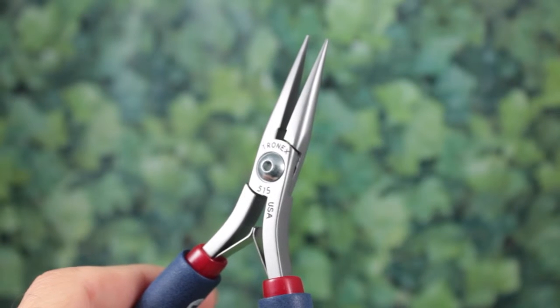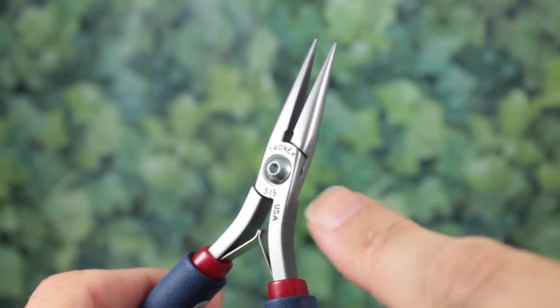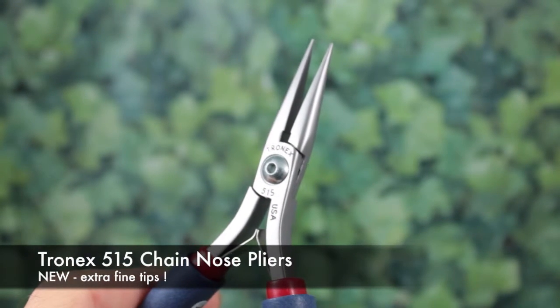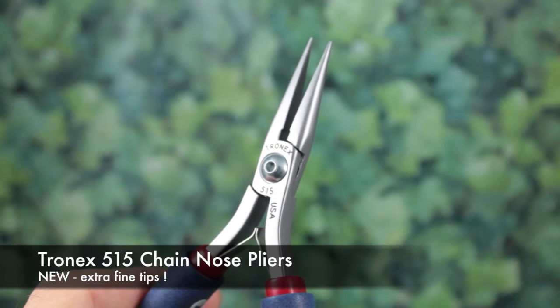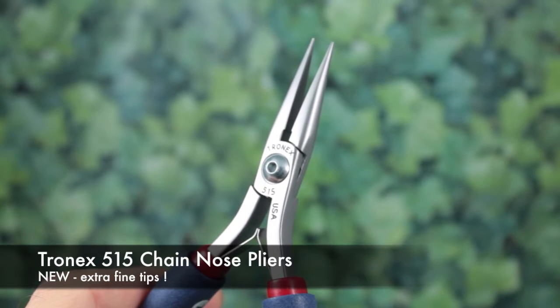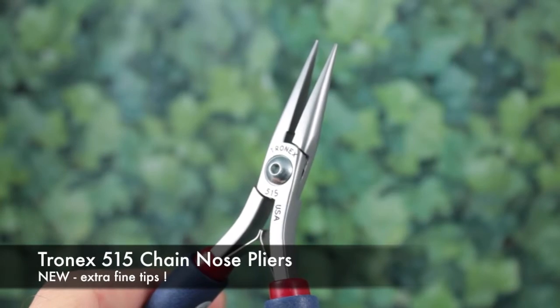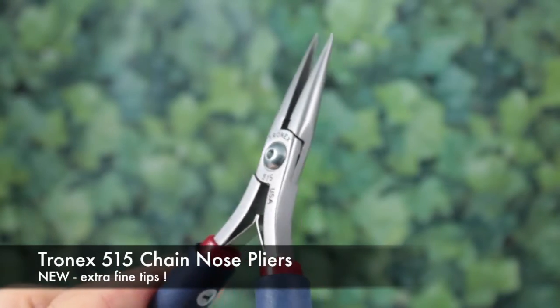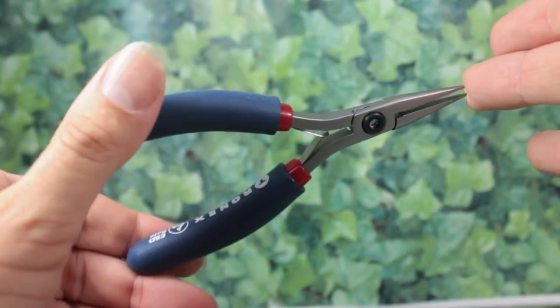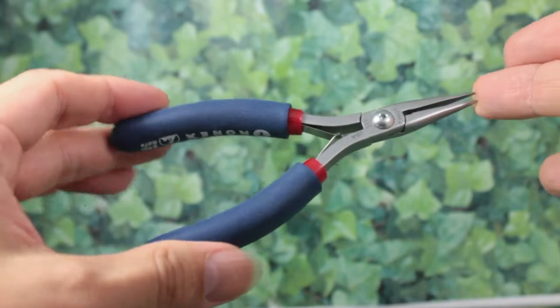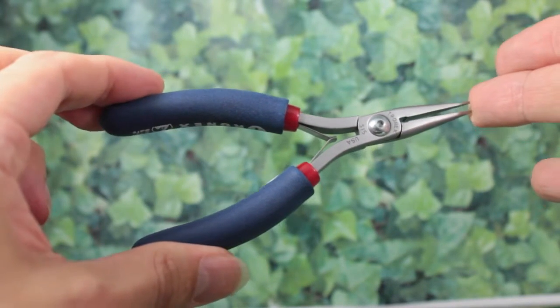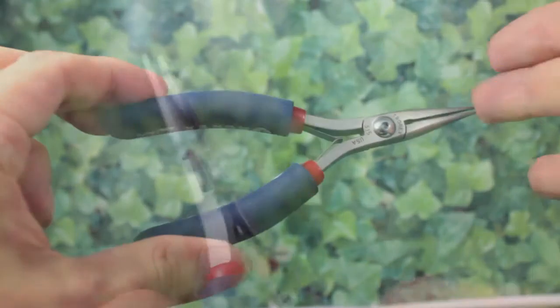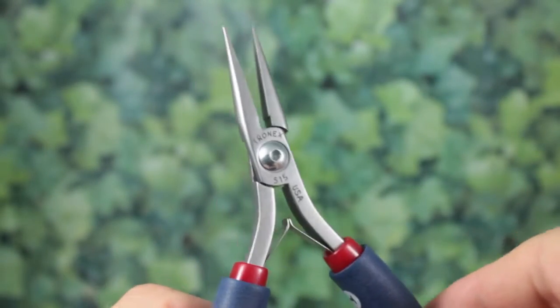So brand new from Tronix. Here we have the 515. These are the Series 5 short handled long nose chain nose pliers. So I'll just spin them around there, let you take a look at them. You can see they're quite pointed, quite tapered. So they do give you the advantages of a pair of tweezers. But of course, you've got the strength of having a pair of pliers.